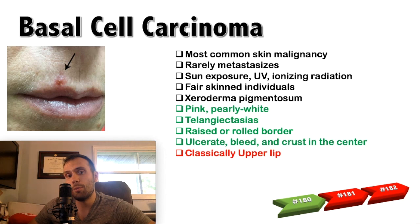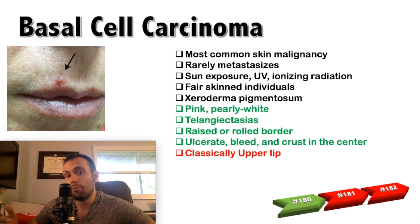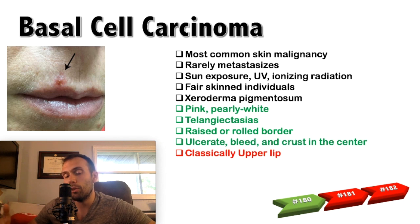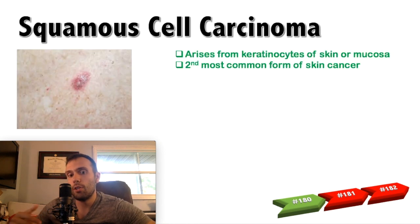In terms of location, anywhere with sun exposure — the arms, legs, face — are classic places for increased risk of basal cell carcinoma. To distinguish between basal and squamous cell carcinoma, questions will often talk about a lesion on the lip. If the lesion is on the upper lip, it's classically going to be basal cell carcinoma. Lesion on the upper lip: basal cell carcinoma.